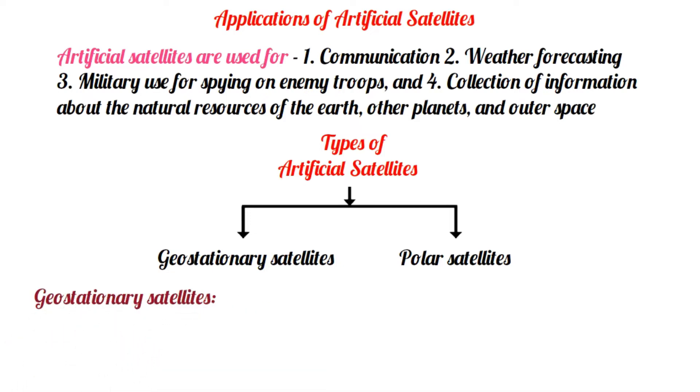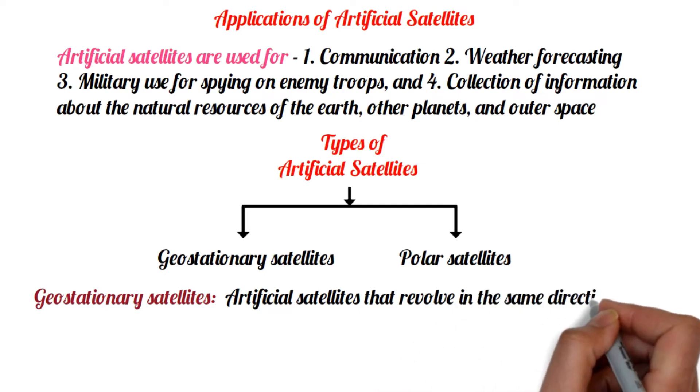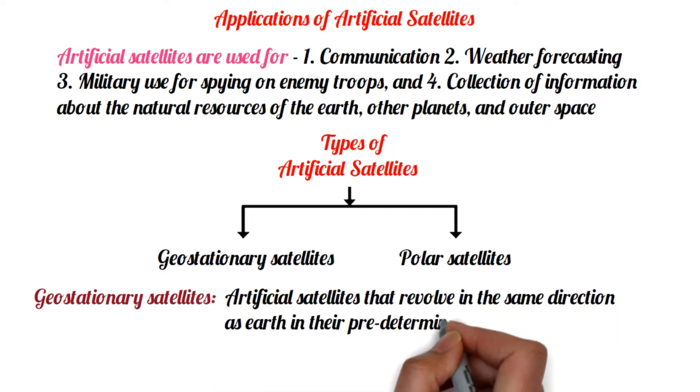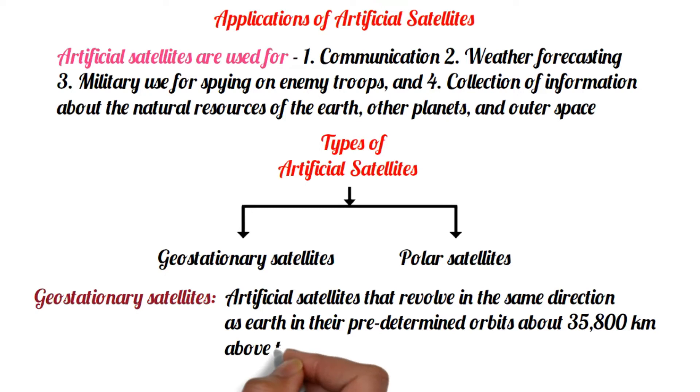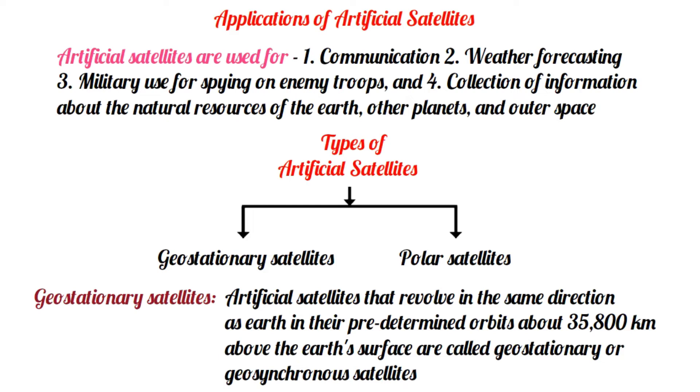Geostationary satellite. Artificial satellites that revolve in the same direction as Earth in their predetermined orbits, about 35,800 kilometers above Earth's surface, are called geostationary or geosynchronous satellites.